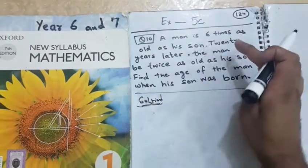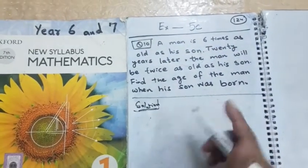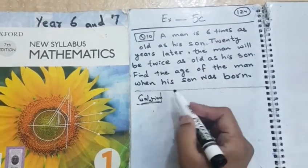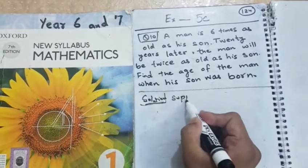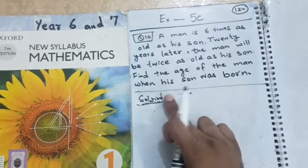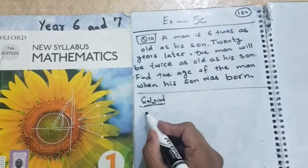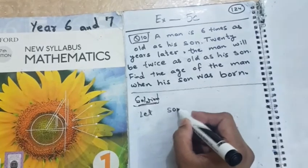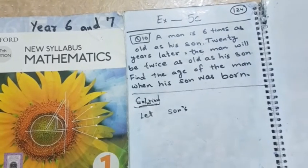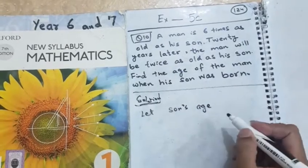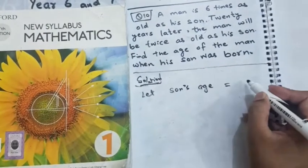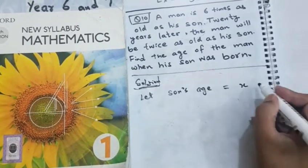A man is six times as old as his son. Suppose the son's age, we don't know what is the son's age. Suppose or let. Let will be a smaller word so better to use it. Let son's age. We don't know what is the son's age. We are just supposing it. We are just assuming it that the son's age is equal to x years.